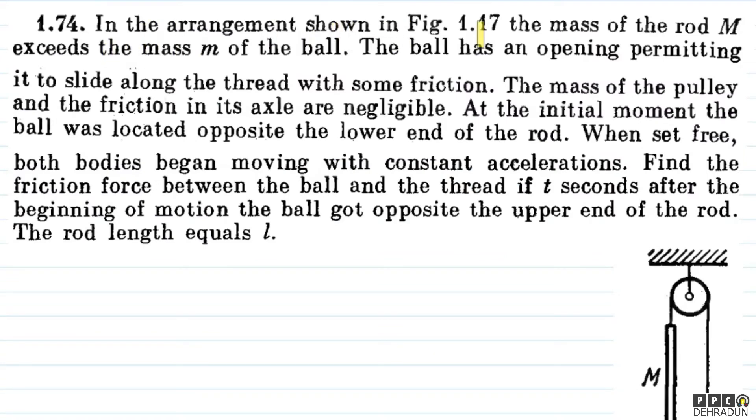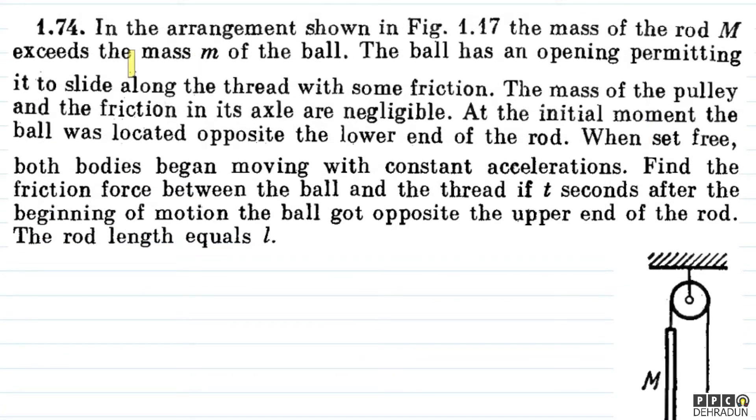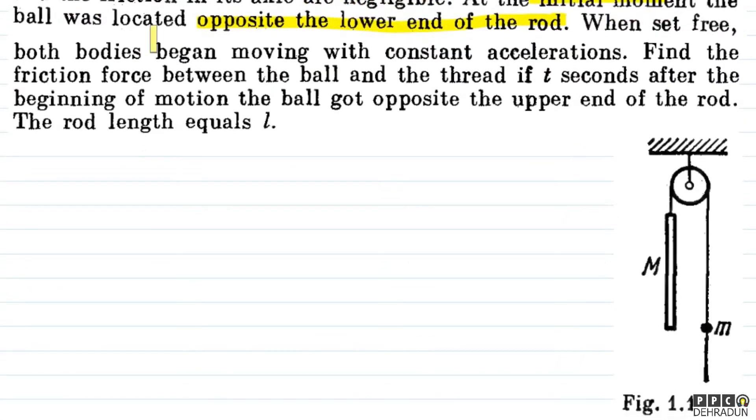The question says, in the arrangement shown in figure 1.17, the mass of the rod M exceeds the mass m of the ball. The ball has an opening permitting it to slide along the thread with some friction. The mass of the pulley and the friction in its axle are negligible. At the initial moment, the ball was located opposite the lower end of the rod. When set free, both bodies begin moving with constant accelerations. Find the friction force between the ball and the thread if t seconds after the beginning of the motion, the ball got opposite the upper end of the rod. The rod length equals small l.